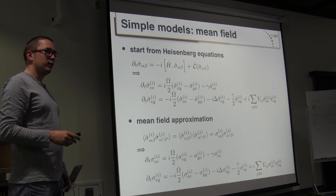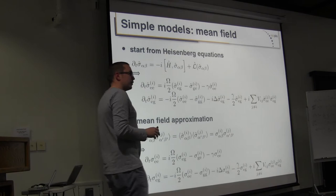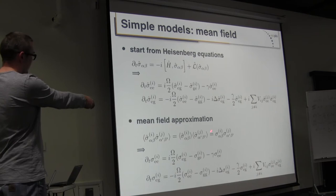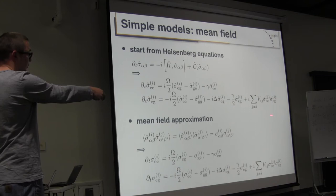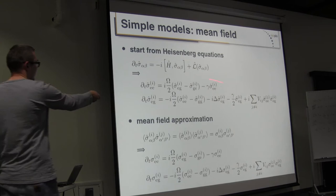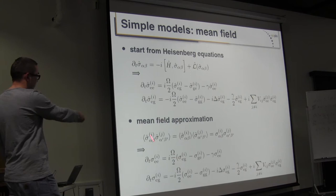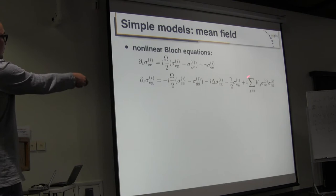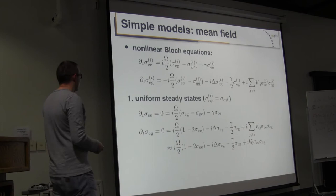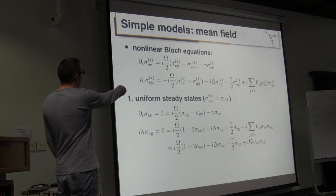This allows us to reduce the infinite hierarchy of equations to a closed set of classical evolution equations for the Rydberg state probability and the coherences. Due to the mean field approximation, the equations become nonlinear - whereas the underlying Schrödinger equation is linear. Nevertheless, they are easy to solve and yield results quite quickly.